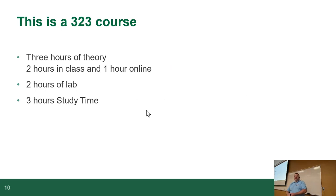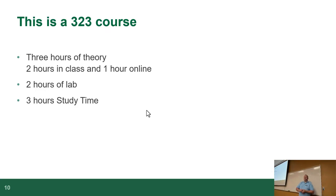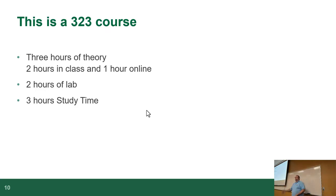This is a 3-2-3 course: three hours of theory in class, one hour online, two hours of lab, and three hours of study time. Realistically, the one online hour isn't every week — it's usually an hour when you're panicking that you forgot to do the hybrids. And that three hours of study time: for a lot of you, it might only be an hour a week.